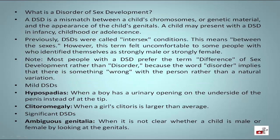What is a Disorder of Sex Development? A DSD is a mismatch between a child's chromosomes, or genetic material, and the appearance of the child's genitals. A child may present with a DSD in infancy, childhood, or adolescence. Previously, DSDs were called intersex conditions, meaning between the sexes. However, this term felt uncomfortable to some people who identified themselves as strongly male or strongly female. Note: most people with a DSD prefer the term "difference of sex development" rather than "disorder," because the word disorder implies there is something wrong with the person rather than a natural variation.